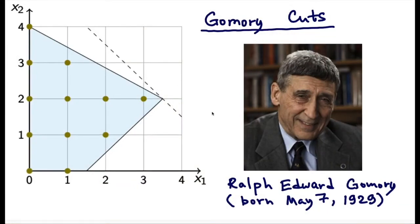Gomory cuts were introduced by Ralph Gomory in his 1958 paper, and this was a major theoretical breakthrough at that time. For the next couple of decades, these methods were largely considered to be of theoretical value. But this gradually changed, and by the end of the 90s, it wouldn't be an exaggeration to say that the cutting plane methods became the single most important factor contributing to the success of modern commercial solvers for mixed integer programs.